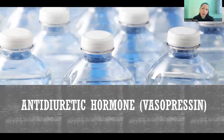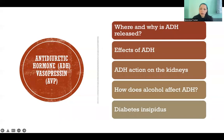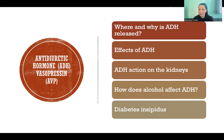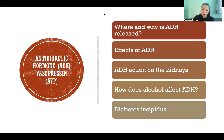Hello, in this video I'm going to talk about antidiuretic hormone, which is also called vasopressin. I'm going to cover where and why ADH is released, the effects of ADH, ADH action in the kidneys — including the physiology of what's taking place — how alcohol affects ADH, and finally, diabetes insipidus.